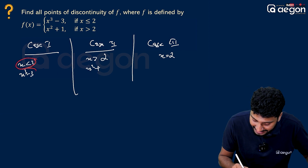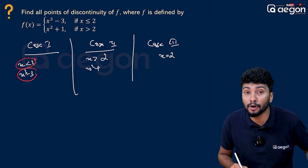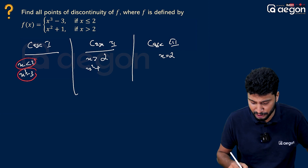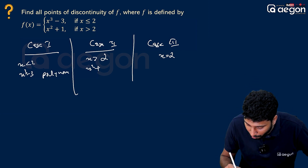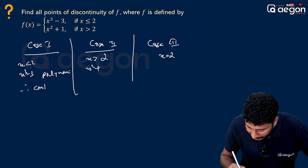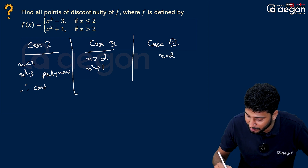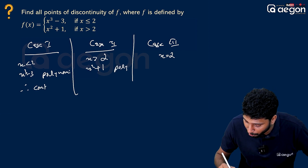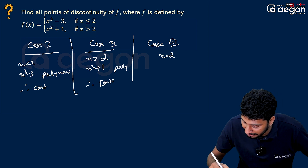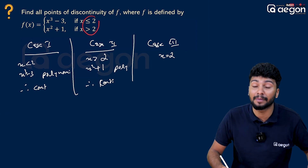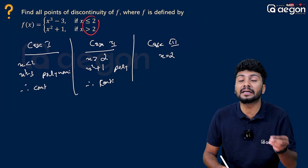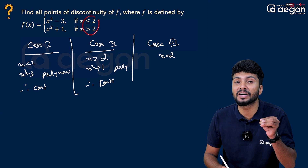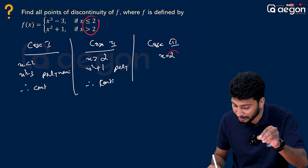For x less than 2, the function x³ minus 3 is a polynomial function, therefore continuous. Similarly, x² plus 1 is also a polynomial, therefore continuous. At x equal to 2, the important check is: left-hand limit, right-hand limit, and the function value at that point.